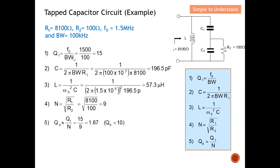Implementing the five steps: first, the circuit Q is the resonant frequency divided by bandwidth, giving QT = 15. Next, the reference capacitor C is calculated as 1 / (2π × bandwidth × RT) = 1 / (2π × 100kHz × 8100Ω), giving approximately 196.5 picofarads. Then the inductor value is calculated as 57.3 microhenries. This is the single inductor value for the tapped capacitor circuit.